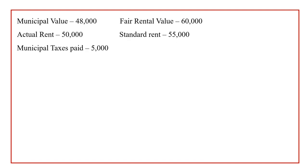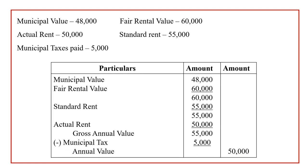Let's see how to do that. I have taken a question as an example. In this problem, we have municipal value, actual rent, municipal taxes, fair rent, and standard rent. Based on this information, how are we going to calculate the annual value? I have given a particulars column and two amount columns. In this question, there is no vacancy and unrealized rent is also not given. So first, we have to start our answer with municipal value. Always, for calculating annual value, you will start your answer with municipal value.